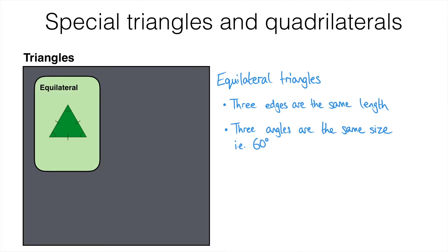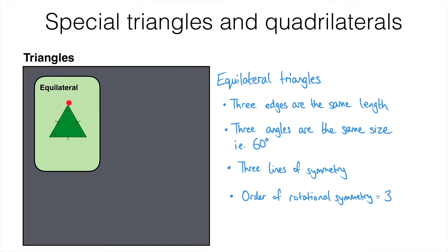There are a couple of other things we can say about equilateral triangles. From lesson G1C you should know about reflection symmetry, and the equilateral triangle has three lines of reflective symmetry. From lesson G1D you should know about rotational symmetry as well, and the equilateral triangle has an order of rotational symmetry of three. That means you could rotate this triangle and it would fit on itself exactly three times during one full turn.